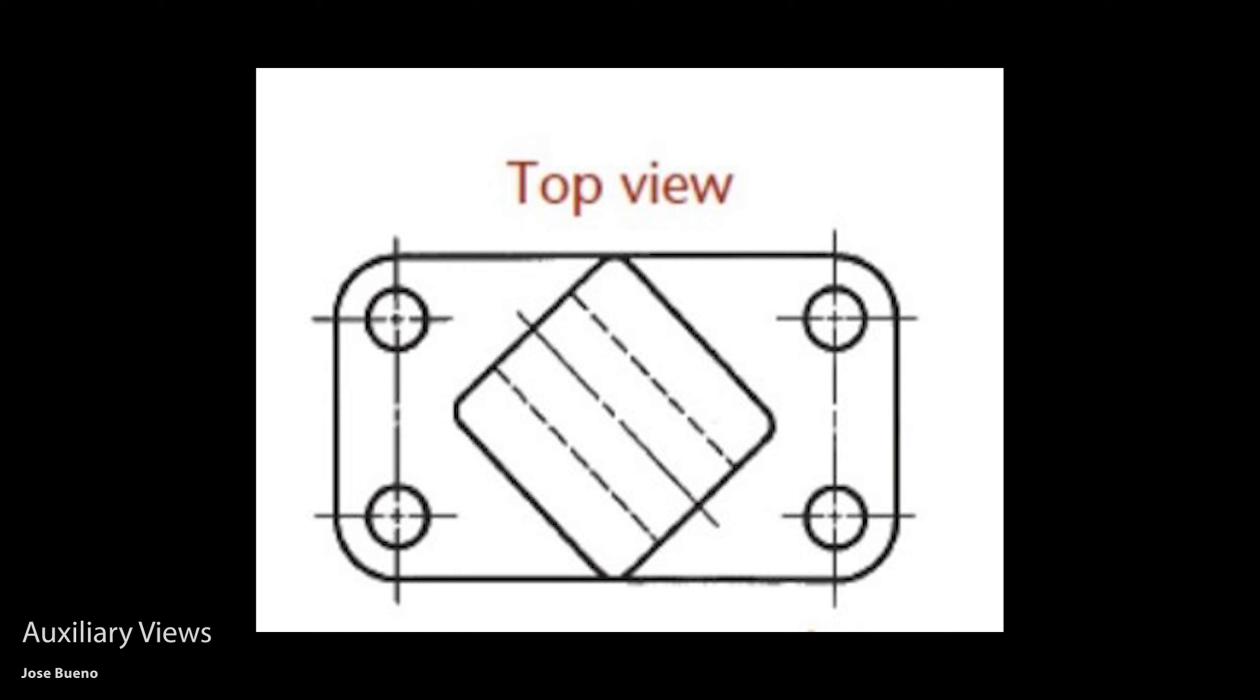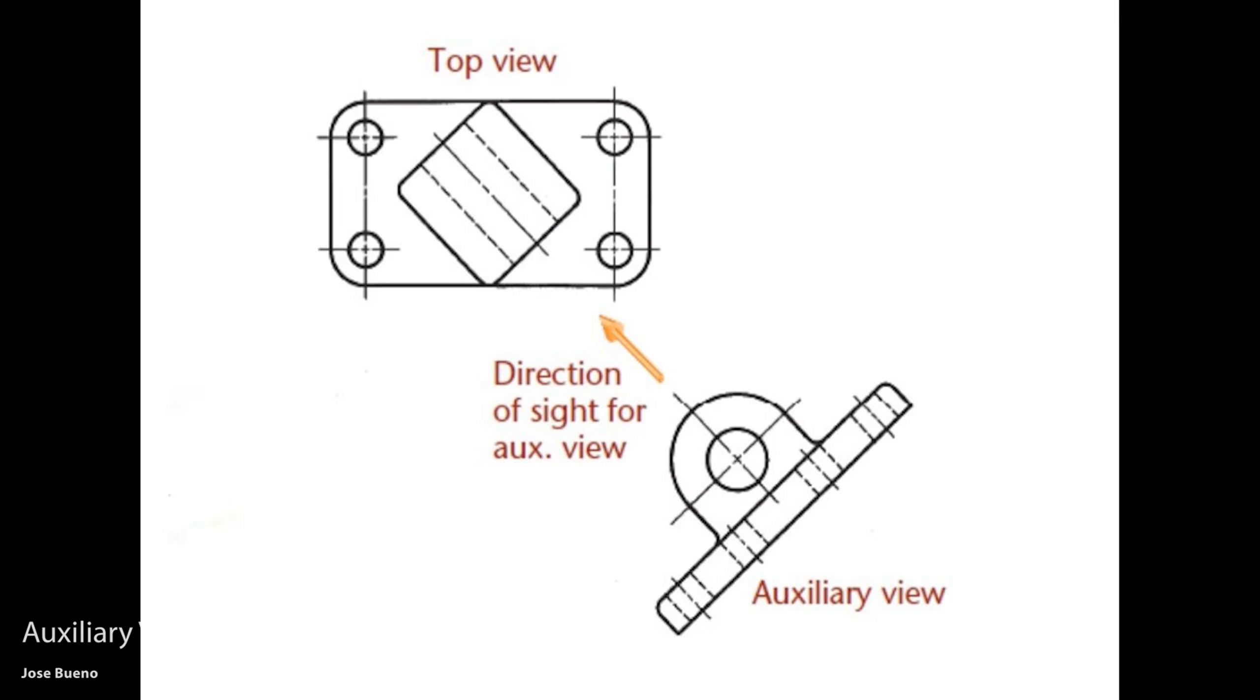So an auxiliary view is just a view from a different angle. So it's a different point of view at this object. So that way you can see information or you can see characteristics of this object that normally could not be drawn using your standard top view, front view, right view, left view, whatever it is, we use the auxiliary view to display the information that cannot be drawn accurately or truly by using orthographic views.